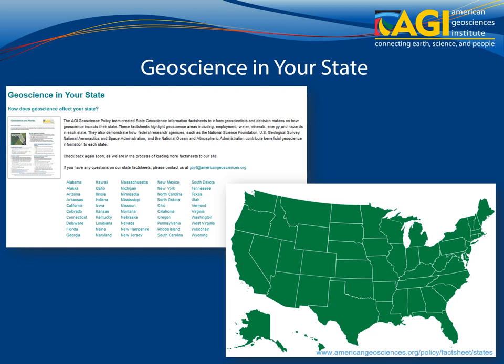AGI offers 50 new fact sheets, which, in addition to providing decision makers with facts about the role of geoscience and the government agencies that fund geoscience in their states, provide educators and students information to help frame Earth Science studies in terms of real-world concerns. Find the fact sheet for your state online.